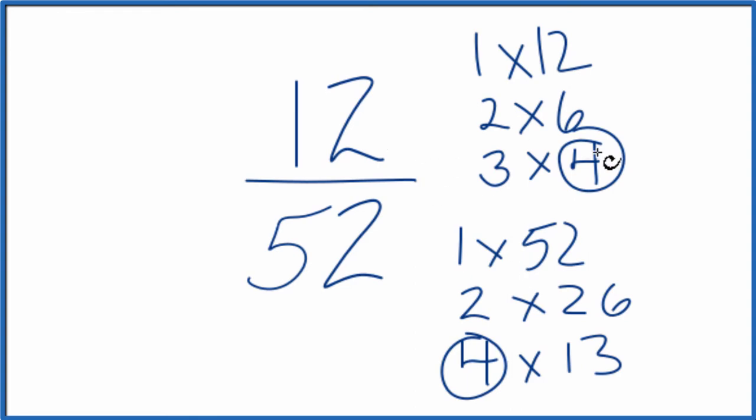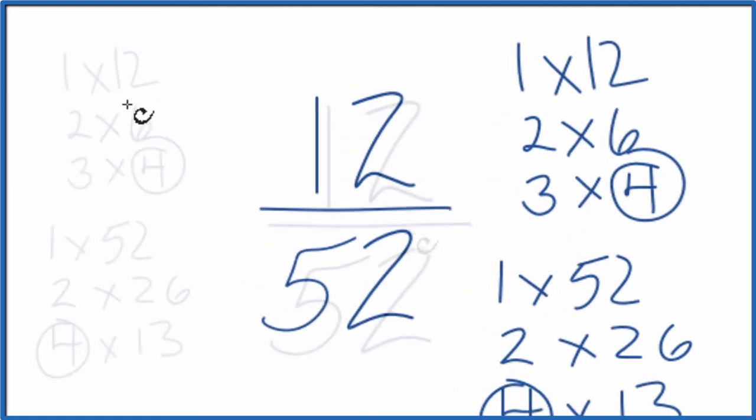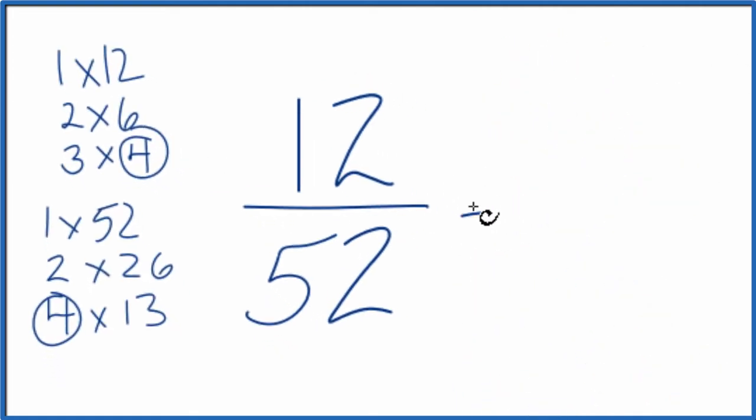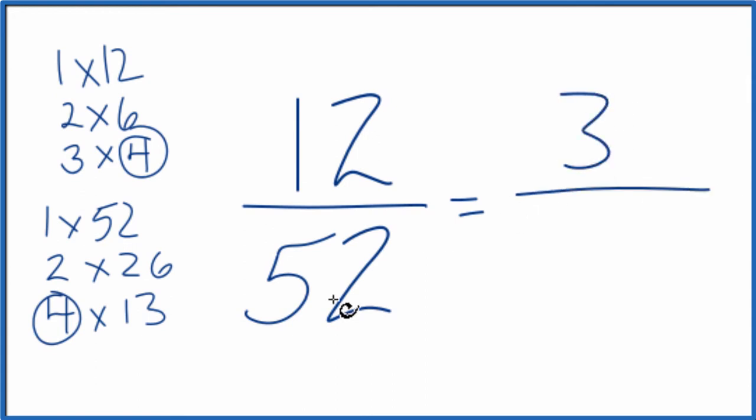So we could divide 12 by four and 52 by four, and we've simplified the fraction 12/52. Let's move these over here. So 12 divided by four, that gives us three and 52 divided by four, that's 13. So we've simplified 12 over 52 down to three over 13. We can't reduce this any further.